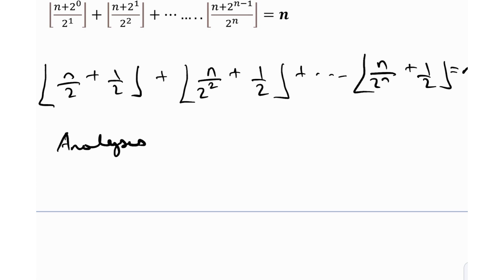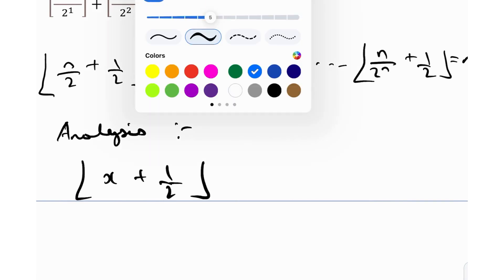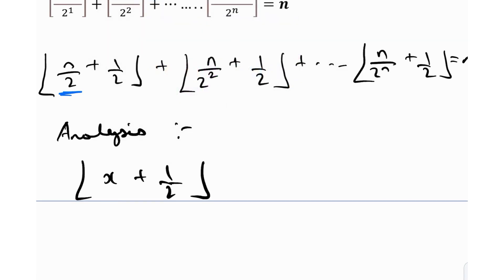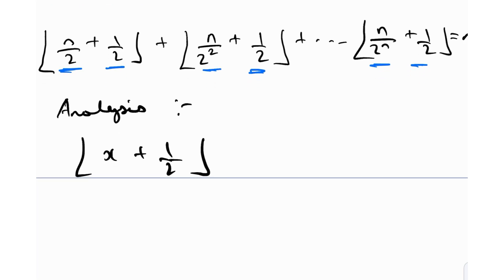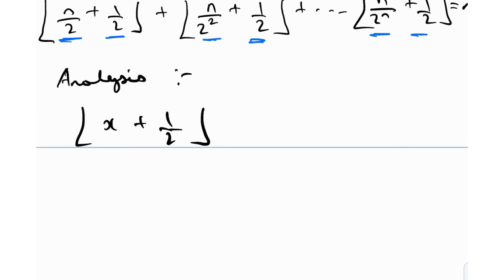We should really be analyzing something, so let's do some analysis. What shall we analyze? We shall analyze the quantity floor(x + 1/2). The reason is pretty simple: as you can see, we have some quantity n/2^m for some m, plus one half — there's always a one half added. So it's a good idea to analyze floor(x + 1/2), and we've done similar things for many Putnam problems.